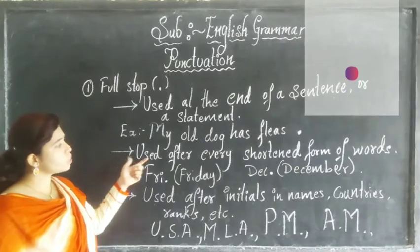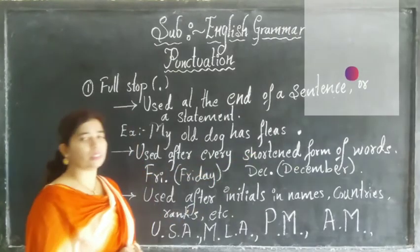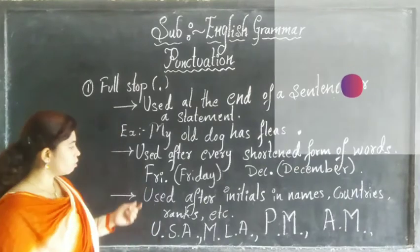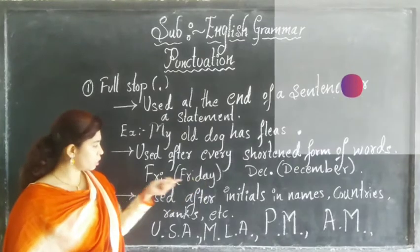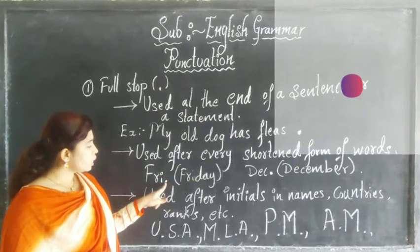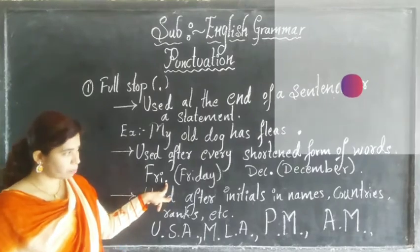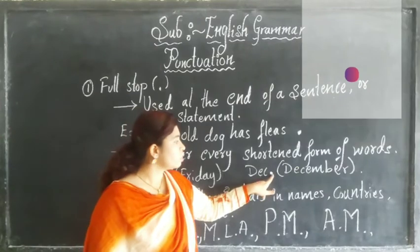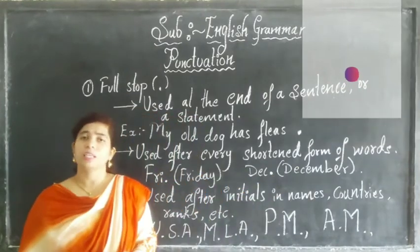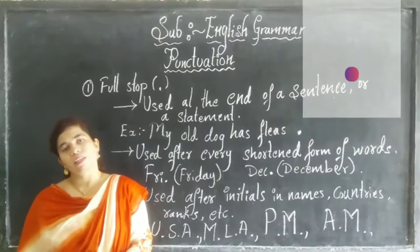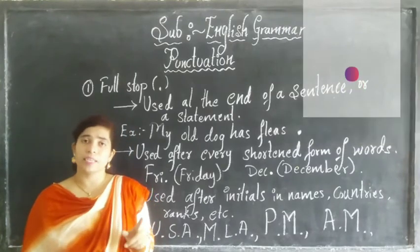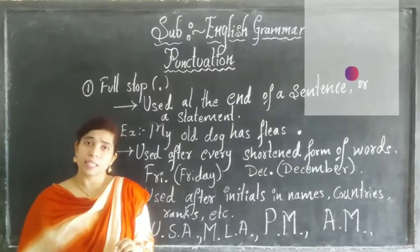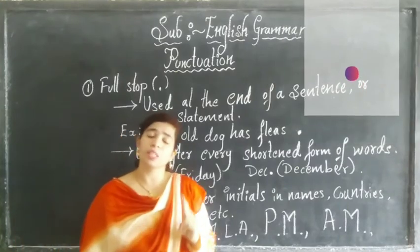The second rule: full stop is used after every shortened form of words. For example, Friday — the short form is FRI with a full stop. December — DEC is the short form, so we put a full stop. Similarly, for Doctor, we write DR followed by a full stop. This is the second rule of using full stop.